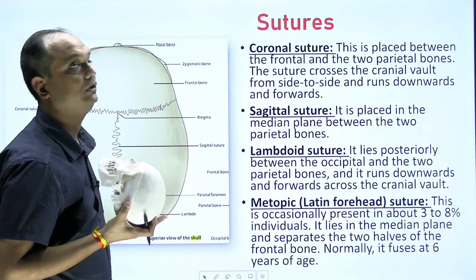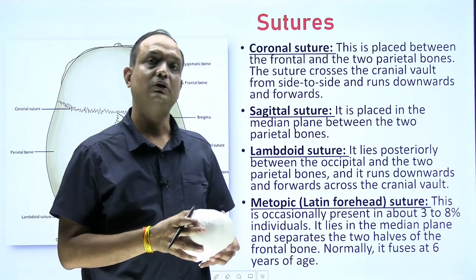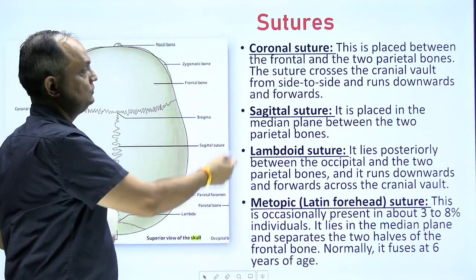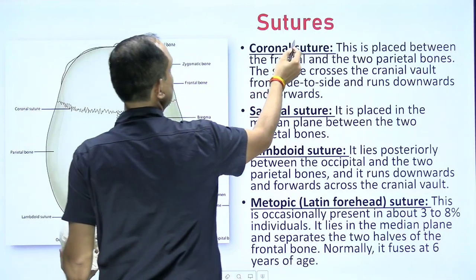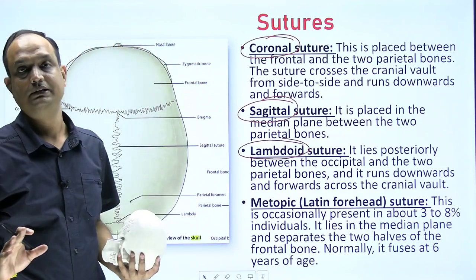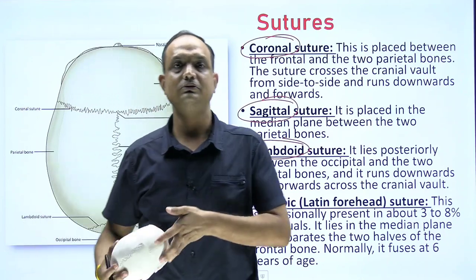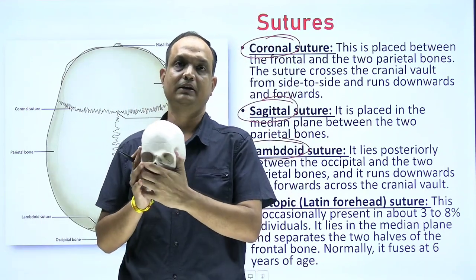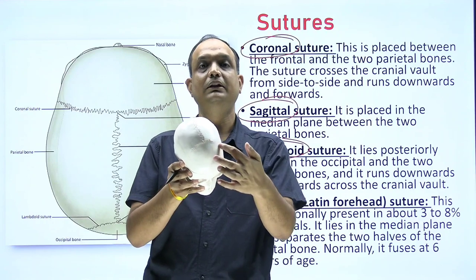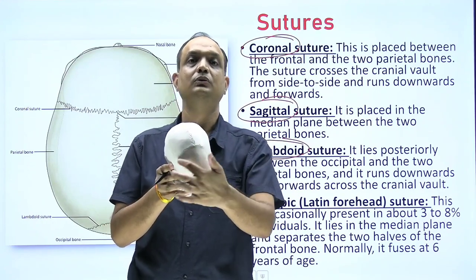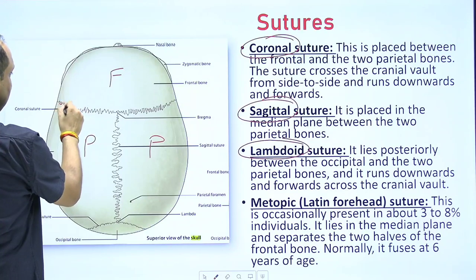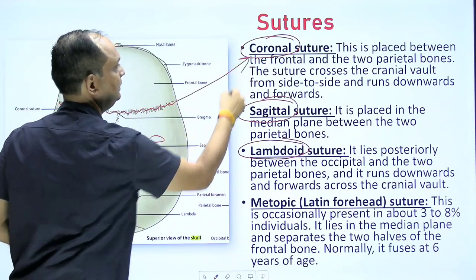Now, what are the joints between these bones? These joints are known as suture joints, which are an example of fibrous variety of joints. When you see these joints, you will find the coronal suture, sagittal suture, and lambdoid suture — three constant findings. The coronal suture lies in the coronal plane, placed anteriorly between the frontal bone and the two parietal bones.